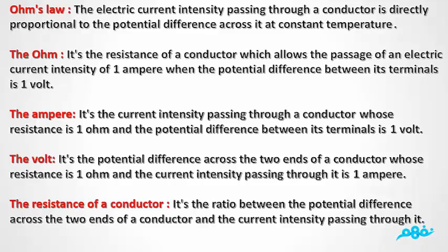Resistance of a conductor is the ratio between the potential difference between the two ends of a conductor and the current intensity passing through it.